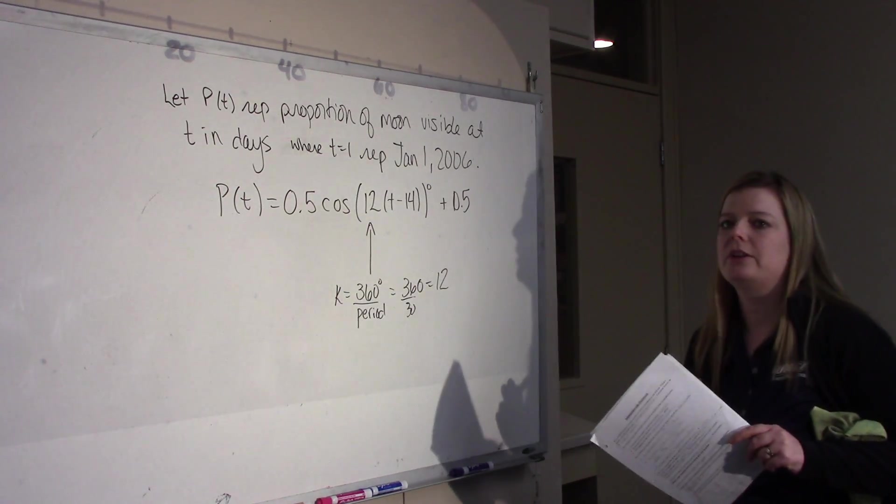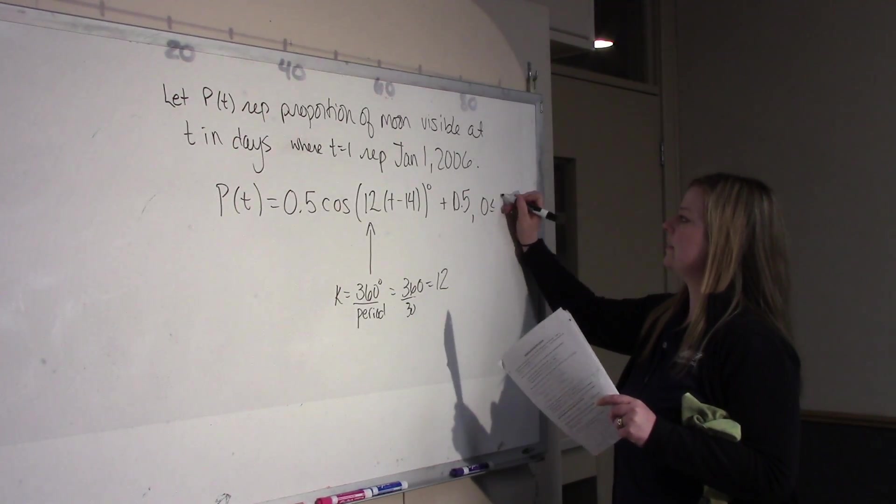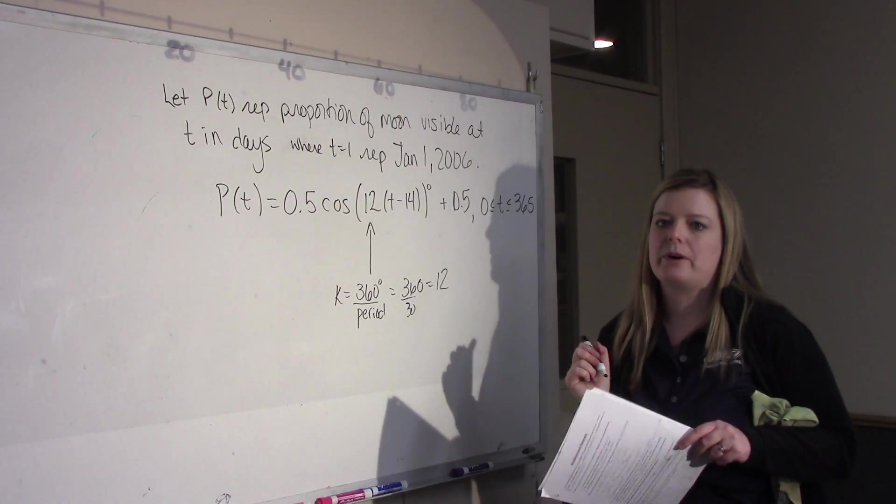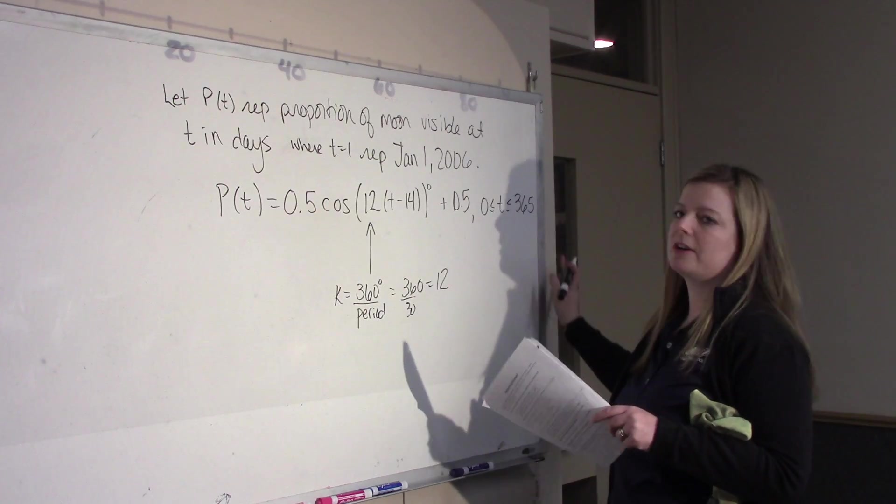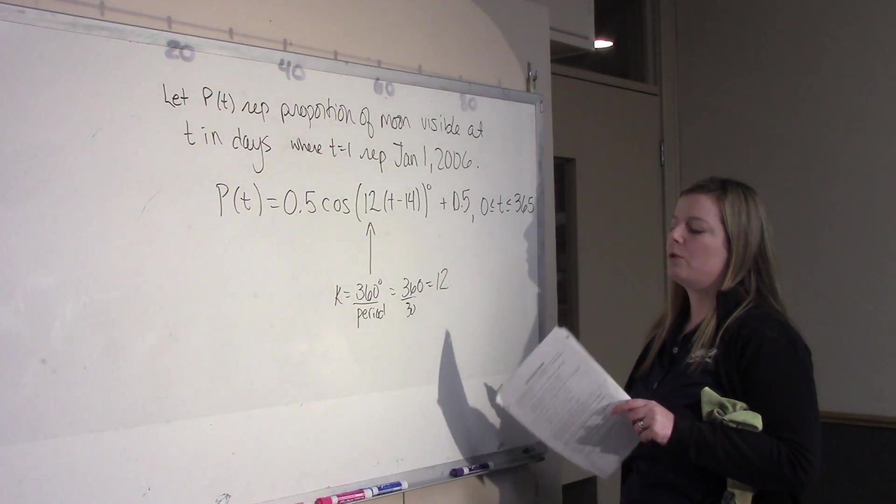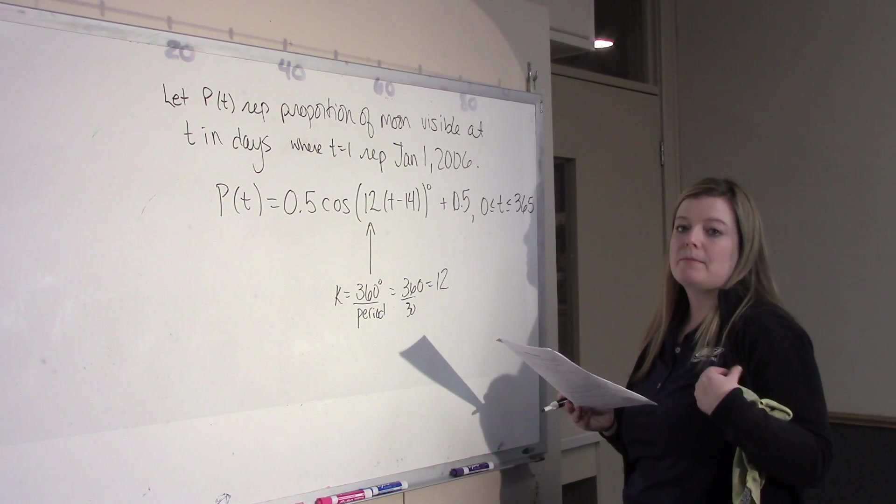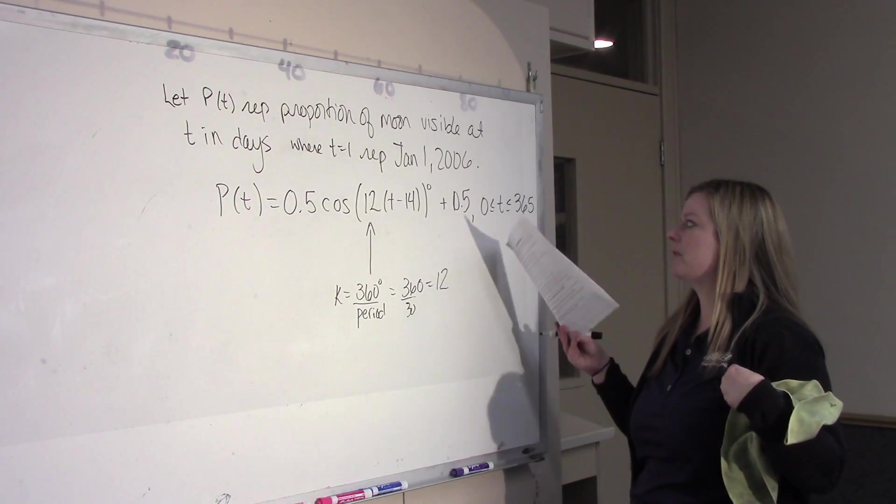Now, I need to include a domain. So, I'm going to just include this for a year. I'm going to say this is good for one year. You need to make some kind of reasonable assumption. If it hasn't told you how good the data is good for, then just make a reasonable assumption as to what the domain should be.